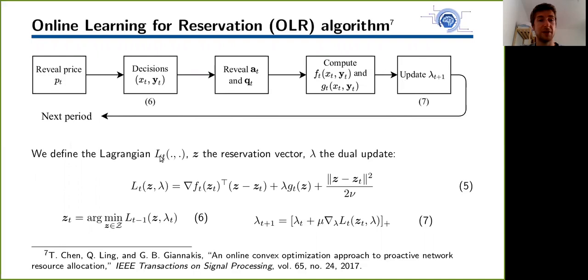Because we opt for this primal-dual approach, we have to define the Lagrangian. Here in equation 5, we recognize the linearized objective plus Lagrange multiplier times constraint function, plus a regularized term that smoothens our reservation policy. This means our reservation does not differ too much from the reservation of the previous time period.